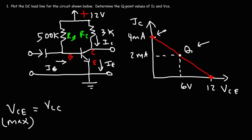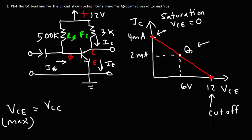The Y-intercept is the saturation region — that's when IC is at its maximum value, and that occurs when VCE is equal to 0. The x-intercept is known as the cutoff region. At the cutoff region, VCE is equal to VCC, and IC is at its minimum value of 0, because on the x-axis the Y value is always 0.